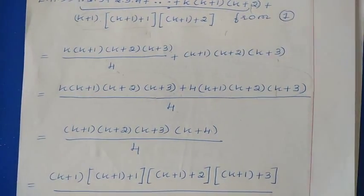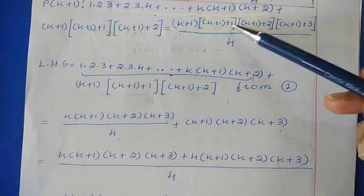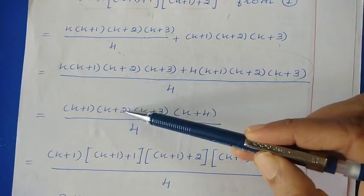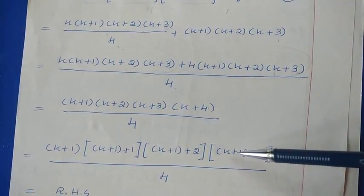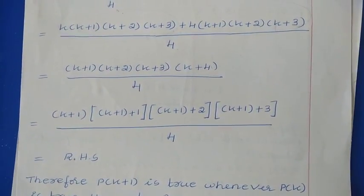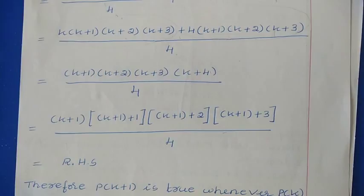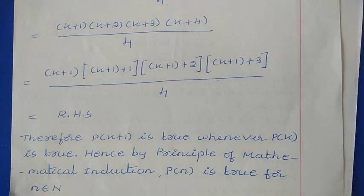We need the answer in the form of K+1: K+2 = (K+1)+1, K+3 = (K+1)+2, K+4 = (K+1)+3. So this is nothing but our right hand side. Therefore the statement is true for P(K+1). Hence, by the principle of mathematical induction, we have proved that the statement is true for all natural numbers. If you like this video, please subscribe to the channel NCR Team and Tutor. Thanks for watching.